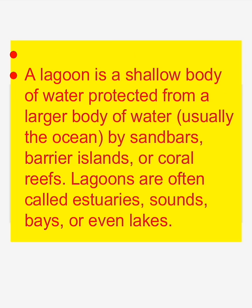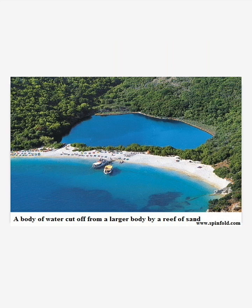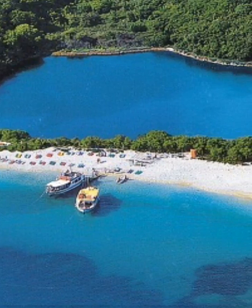The striking features of a lagoon are: there is saline water, and there is a barrier which separates the lagoon from the larger water body. Look at this image — the upper side is known as the lagoon, and on the downside there is a larger body of water, like an ocean or sea. There is a barrier in between, such as sandbars.